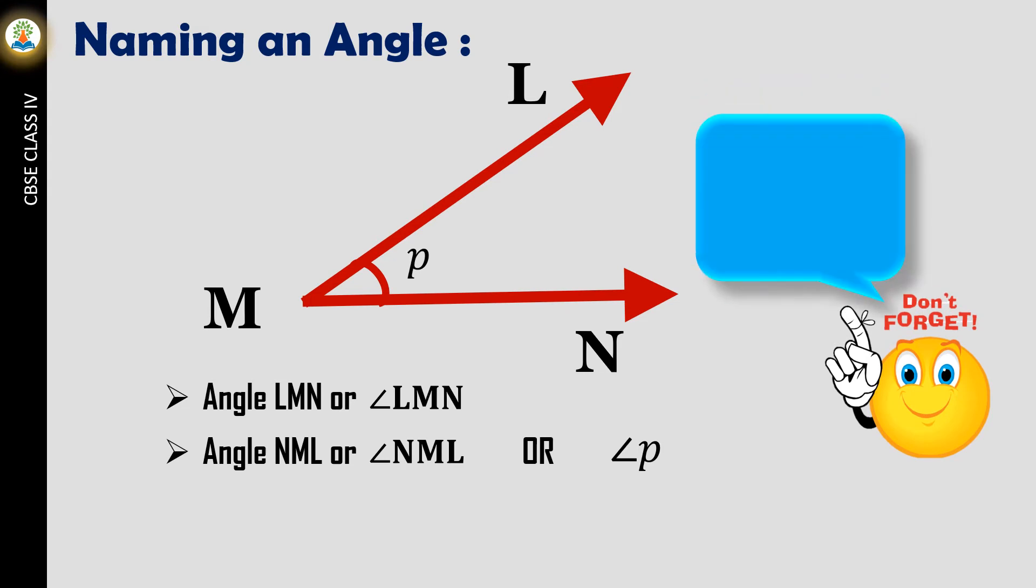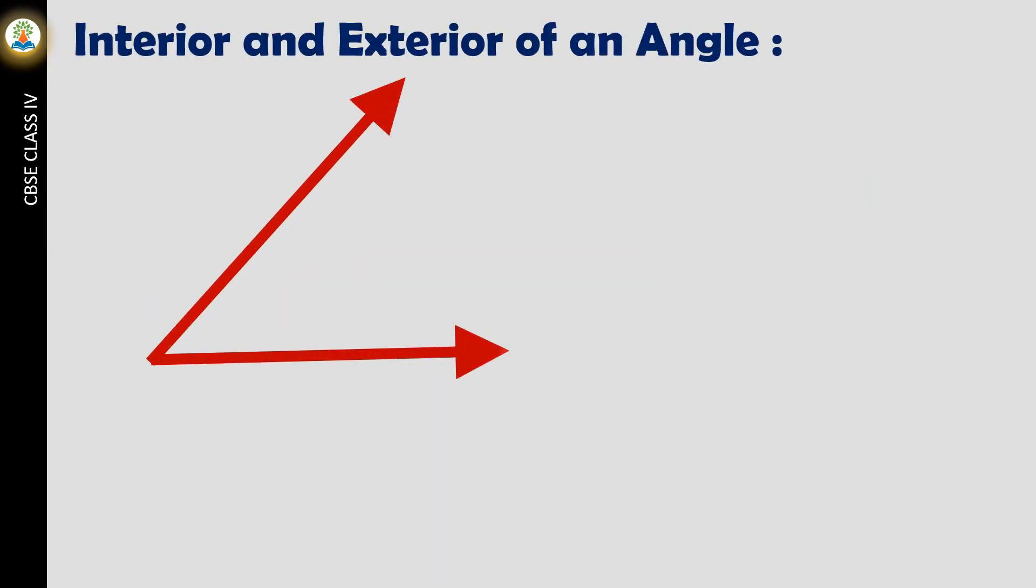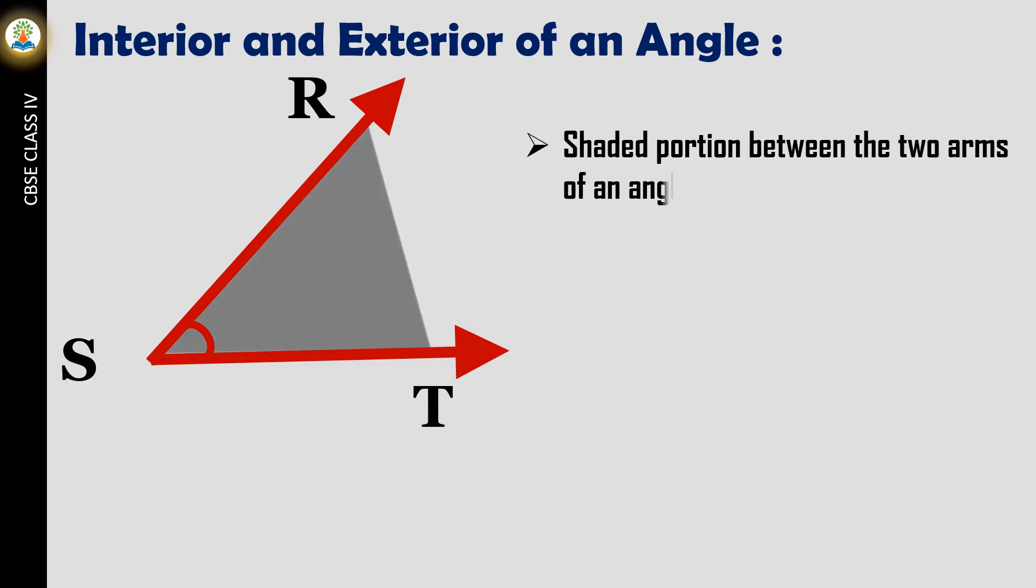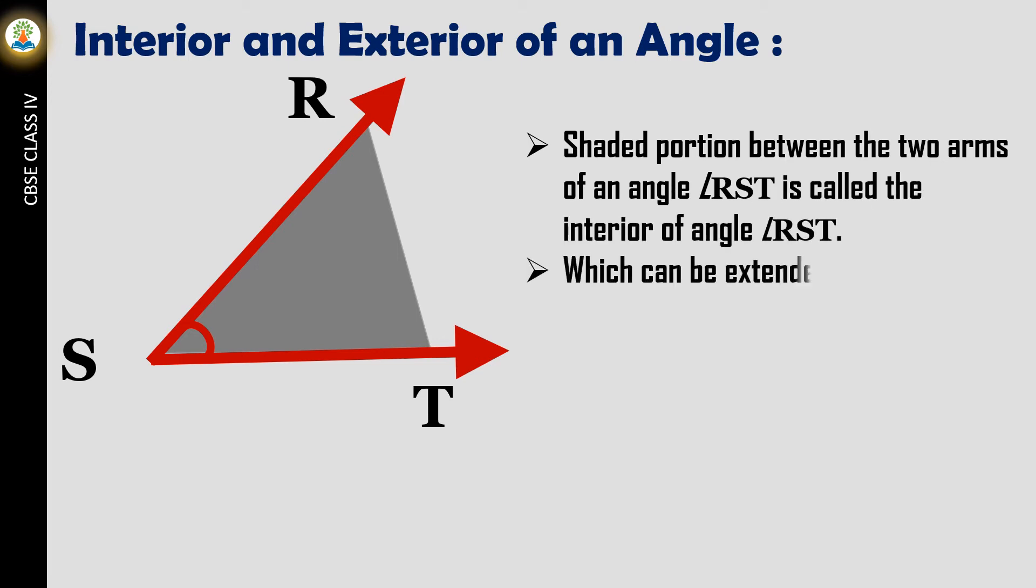Remember, while naming an angle, the vertex is always in the center. The shaded portion between the two arms of an angle RST is called the interior of angle RST, which can be extended indefinitely.